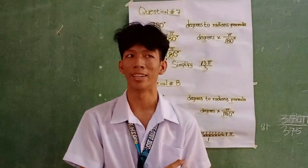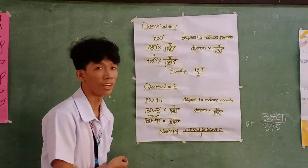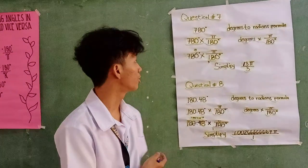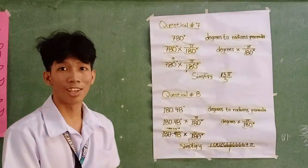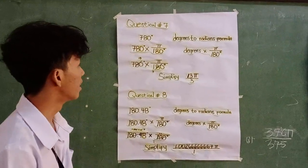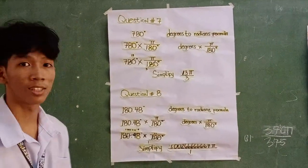Two days ago I was assigned to report by answering questions number 7 and 8 on how to convert angles to radians and vice versa. Question number 7 is 780 degrees. The degrees to radians formula is degrees times pi over 180 degrees.